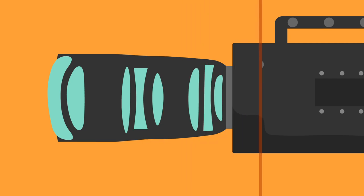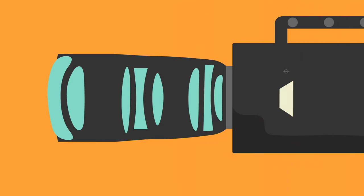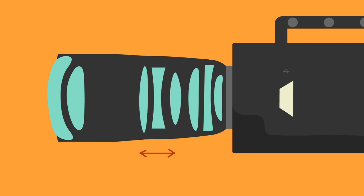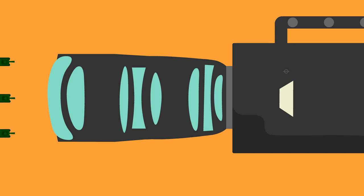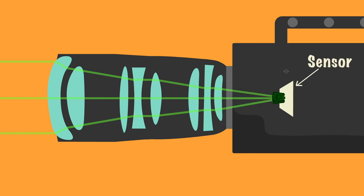This is also how diopters work, but we'll come back to that later. By pulling focus on a lens, we adjust the glass elements inside and position the light to focus to a point. In this case, we want that point to land right on the camera's sensor.